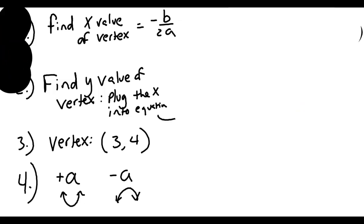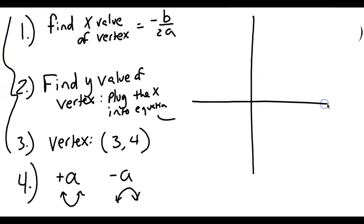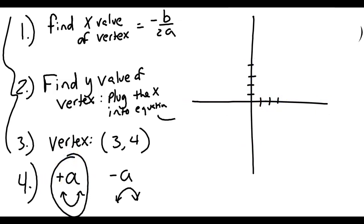When it's in vertex form you can see your vertex directly — that's what makes it so easy. But when it's in standard form, you have to calculate your vertex using those three steps: use negative b over 2a, plug in for y, and determine the shape from a. My vertex was at (3, 4) and we had a happy face parabola, which will be enough to get you the right answer.